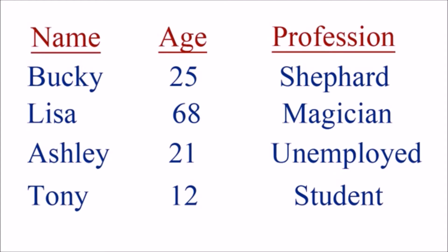Say I wanted to make a table to organize all of my friends. I would have each column with a specific category — for example, the first column would be name, another column would be age, and my last category for this example is profession. As you can see, columns are like categories. The rows are a little bit different because each individual entry goes on a separate row.